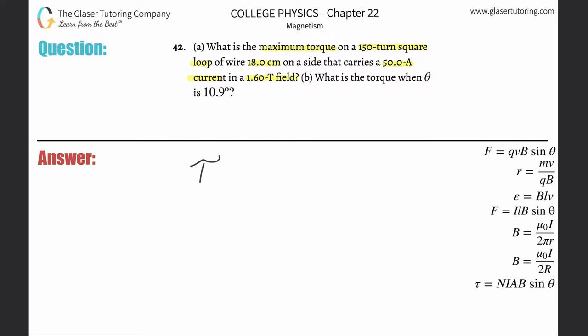The torque on that current carrying loop of wire will equal the number of turns of the wire multiplied by the current flowing through the wire multiplied by the area of the wire, you can think about it like cross-sectional area if you wanted, even though it's technically not, multiplied then by the magnetic field strength passing through the wire multiplied by the sine of the angle between the magnetic field and the normal of the area.